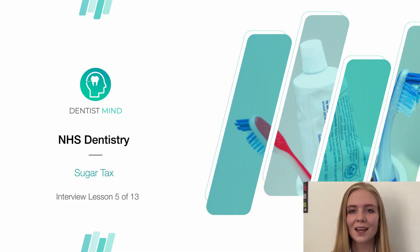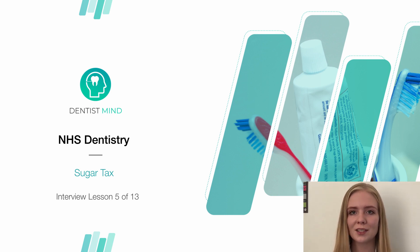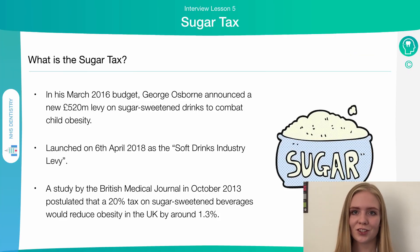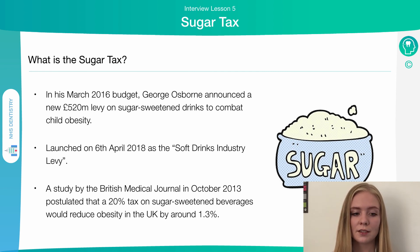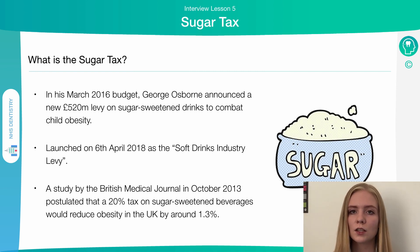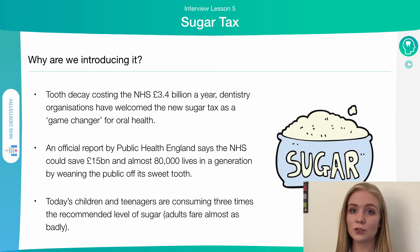Welcome to lesson 5 on NHS dentistry. This time we're going to look at the sugar tax, the implications it's had, and the reasons why it was introduced. In 2016, George Osborne proposed a tax on sugar sweetened drinks to help combat childhood obesity, which was actually introduced in April 2018. In 2013, the British Medical Journal carried out a study proposing that a 20% tax on sugar sweetened drinks would help reduce obesity in the UK by about 1.3%.